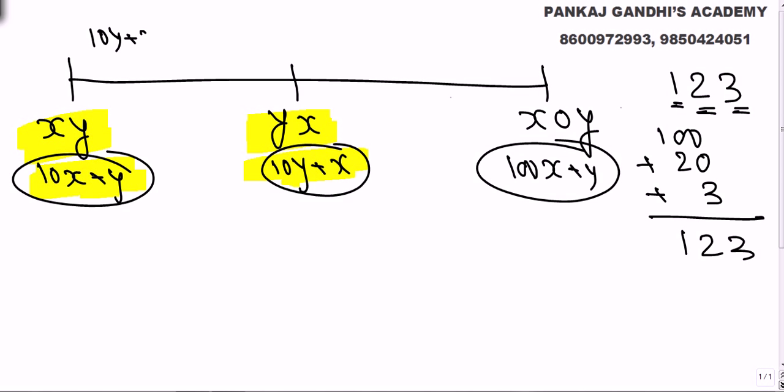So how much did the car go in one hour? This minus this. So what we get is 9y minus 9x. And in one hour from 10y plus x to 100x plus y.